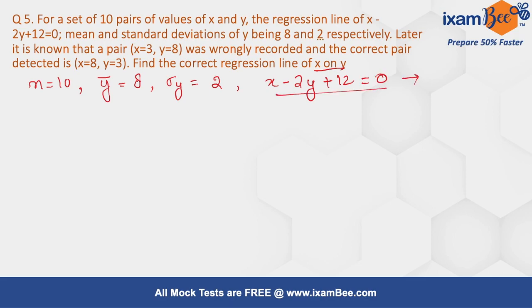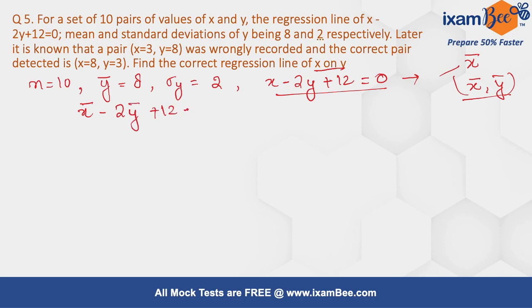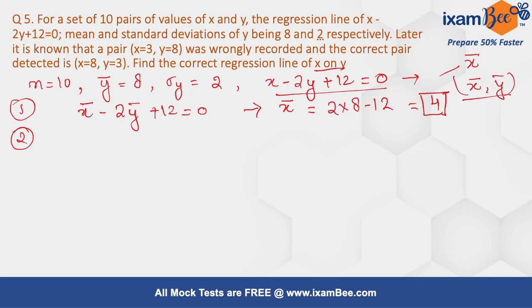We have to find the value for x̄, since ȳ is already given. Any regression line passes through the pair of means, so putting the means into the regression line gives x̄ minus 2ȳ plus 12 equals zero. Substituting ȳ equals 8, we can find that x̄ equals 4.